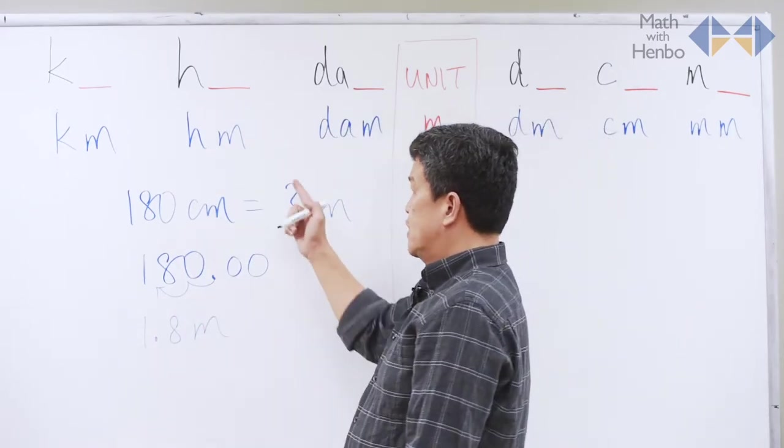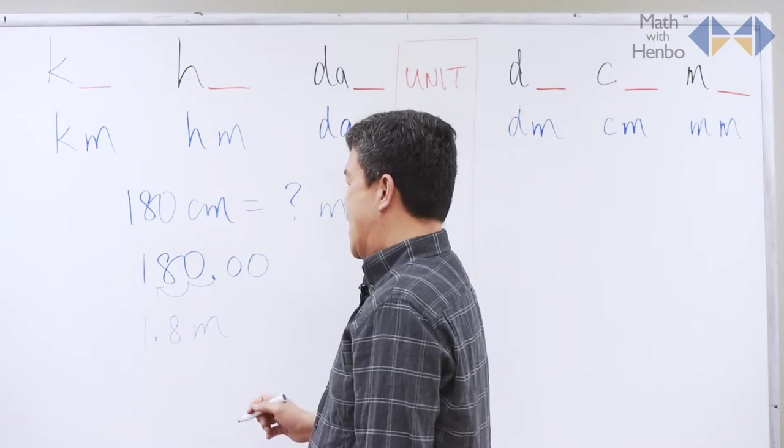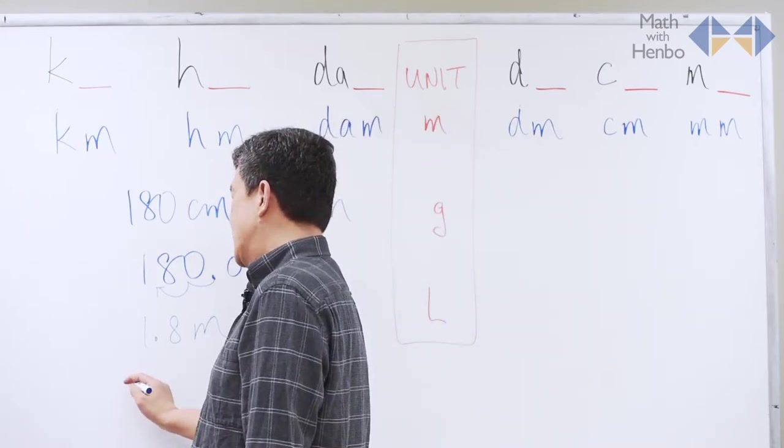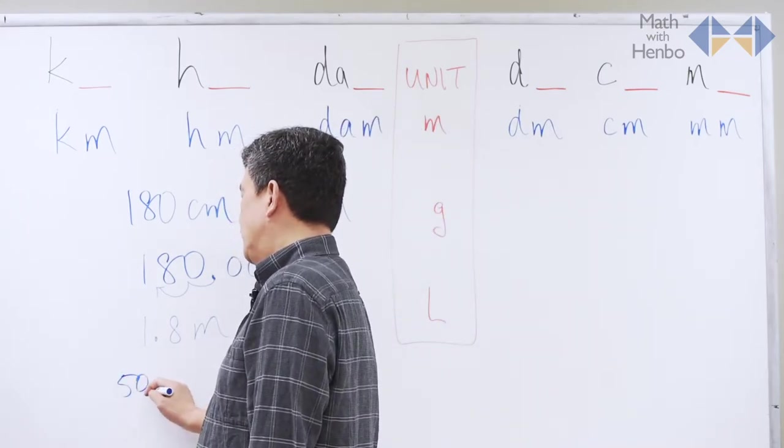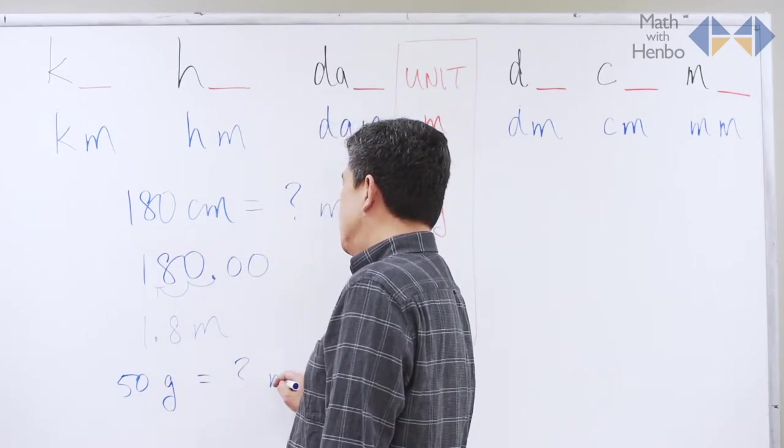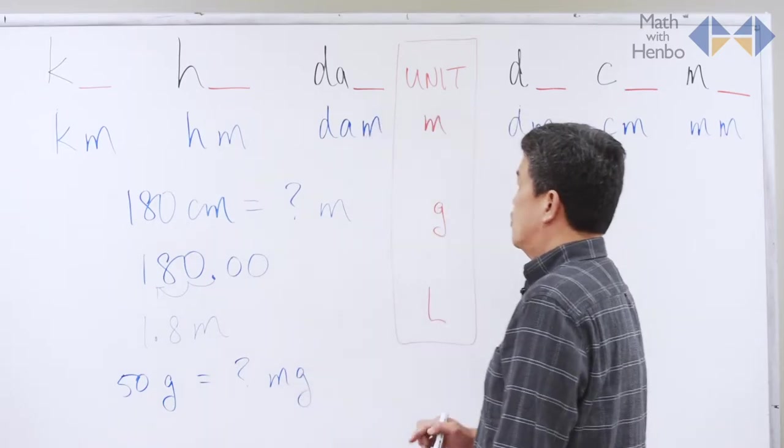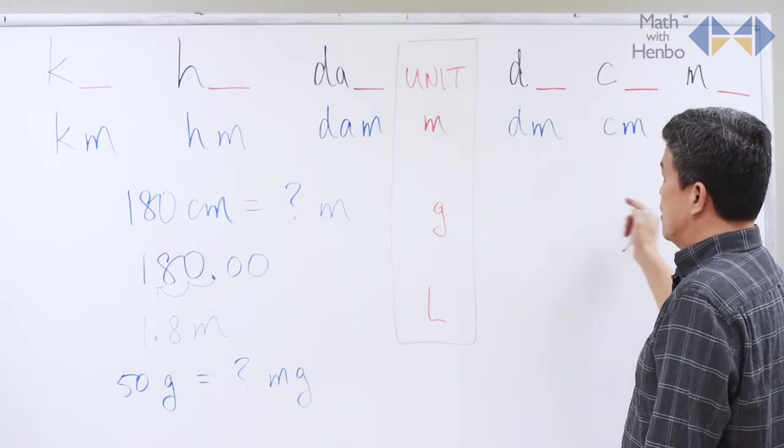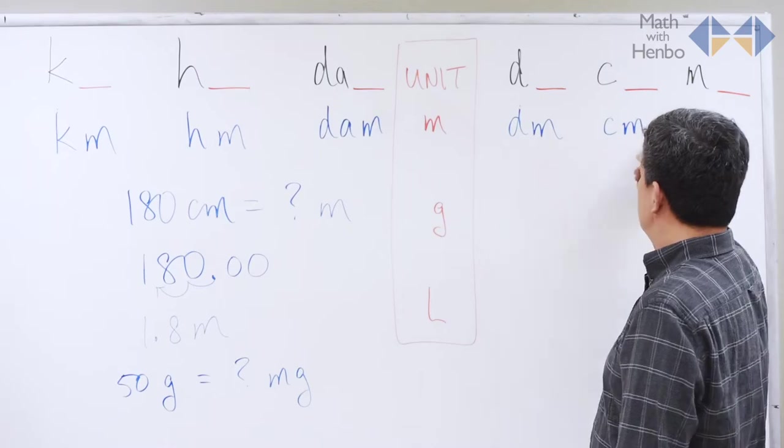Another way to do it, to give you an example, if I change the M to gram. So, let's say I have 50 grams. Now, what is that as a milligram? So, to go from gram to milligram here, just simply follow the thing.